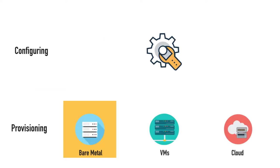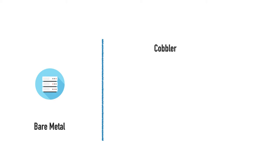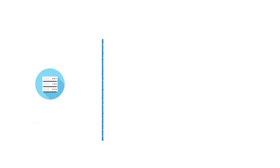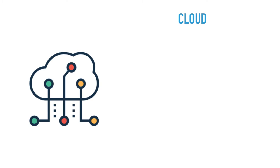That provisioning can be automated using various tools. For bare metal systems, you could use tools such as Cobbler, Razor, Kickstart, and Preseed. Since you don't have APIs, you'll have to rely on some sort of network boot, and almost all of these tools use network boot. Some of them, such as Razor, also help you make intelligent provisioning decisions.